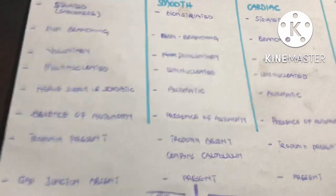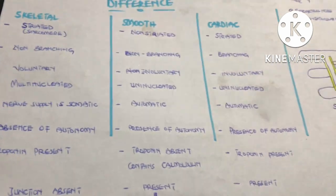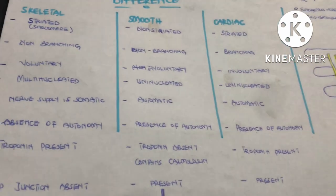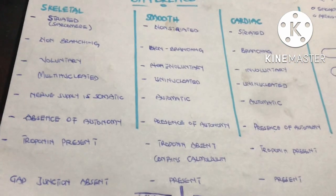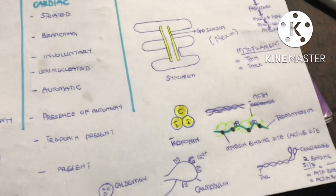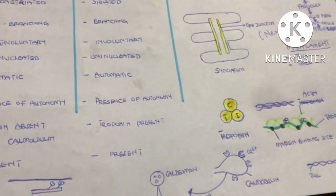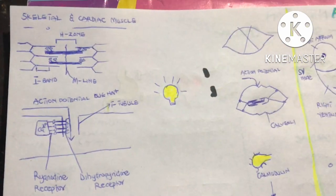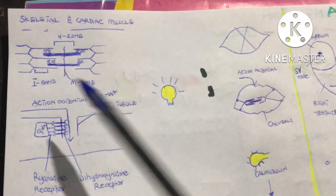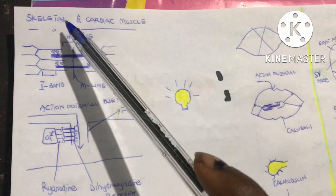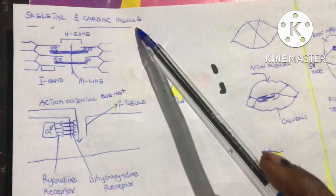Smooth muscles are able to contract simultaneously by the help of gap junctions, but in skeletal muscle gap junctions are absent, so each skeletal muscle fiber contracts on its own.